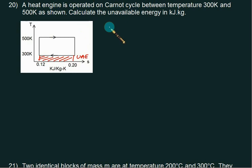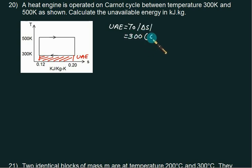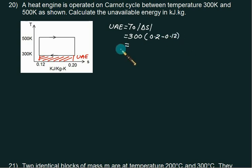Unavailable energy is simply equal to T0 multiplied by ΔS. Every time we have to take the absolute value of ΔS. So we have 300 and ΔS is 0.2 minus 0.1, which gives 0.1. So this answer comes out to be 24 kilojoules per kg.